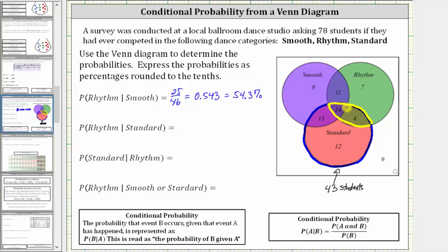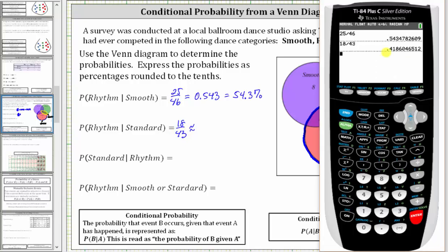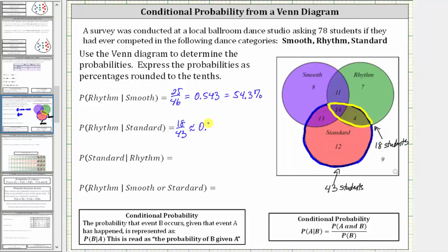These are the students that competed in standard and also competed in rhythm. There are 14 plus 4, or 18 students in this subset. So the probability a student competed in rhythm given they competed in standard is 18 out of 43, which is approximately 0.419, which is equal to 41.9%.